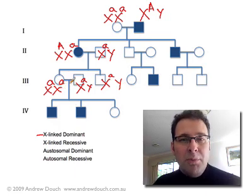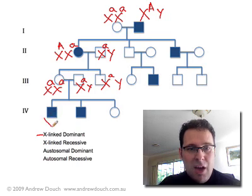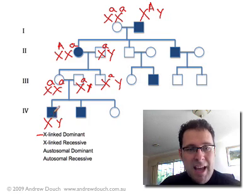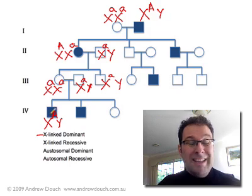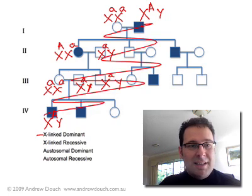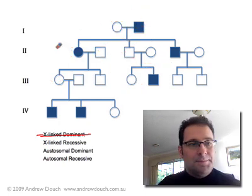This is where we run into a problem with the first hypothesis, because this couple now have a son who only has one X chromosome — he gets his Y chromosome from dad. But on his X chromosome he must have a big A, because otherwise he wouldn't have the dominant phenotype; he wouldn't be shaded in, and yet he clearly is. And yet his mother couldn't have possibly given him that big A allele. So this can't possibly be an X-linked dominant trait — we can rule that one out.